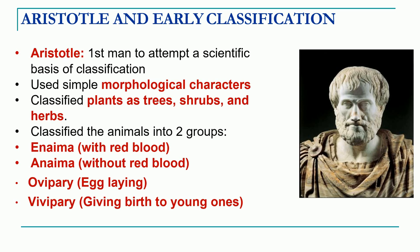We have already studied the history of taxonomy, where we came across the contribution of the great Aristotle. He was the first one to attempt scientific classification and gave the backbone framework for the basis of classification. He used simple morphological characters for classifying living organisms. Plants were classified simply into three groups: trees, shrubs, and herbs. Animals were classified based on presence of blood into two groups. Based on the type of birth, organisms were classified into ovipari, that is egg-laying animals, and vivipari, animals which directly give birth to young ones.